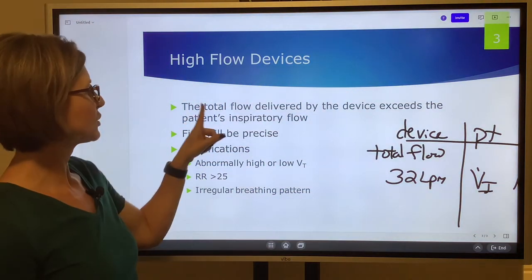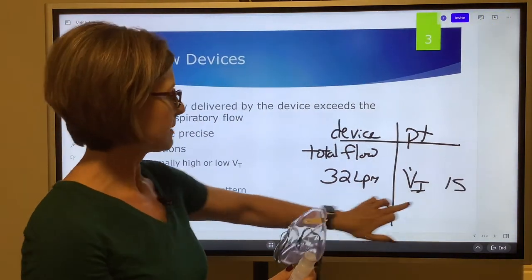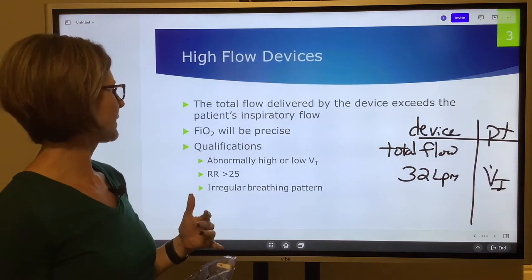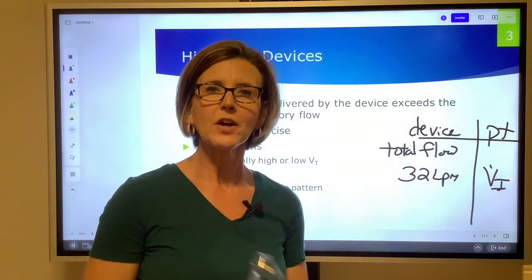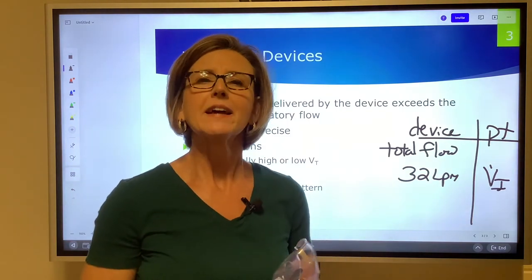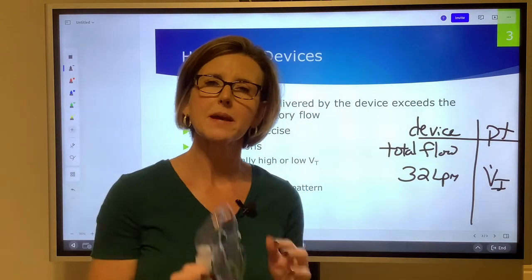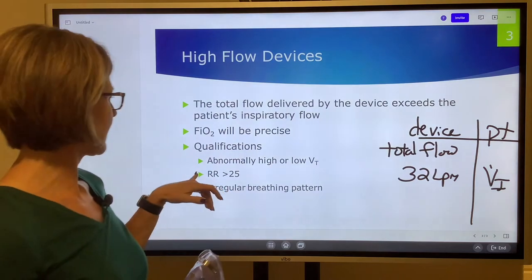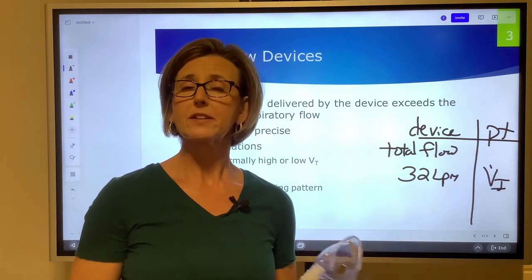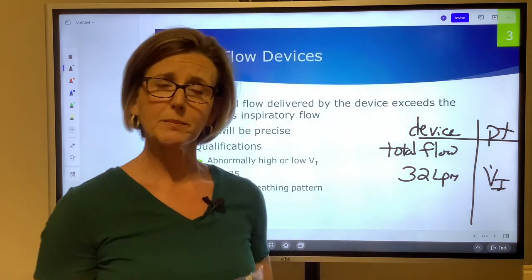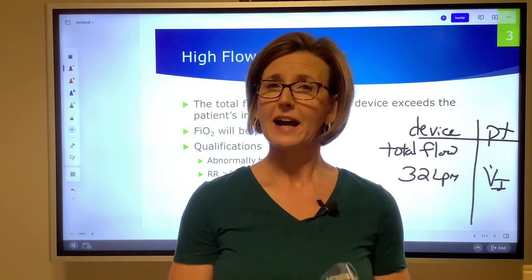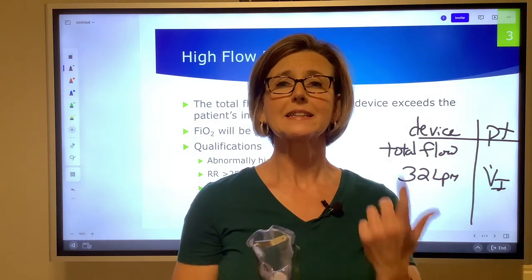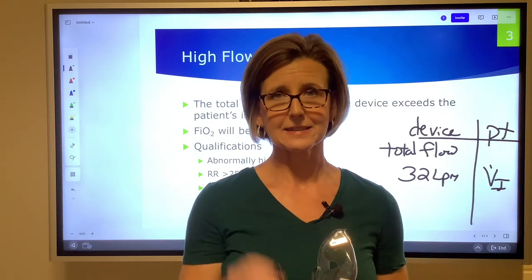The reason is that the total flow delivered by the device exceeds the patient's inspiratory flow. For high flow devices, we look at: abnormally low or high tidal volume — if you can barely see the patient breathe or they're hyper-expanding — an irregular breathing pattern, or a respiratory rate greater than 25. These patients benefit from a more precise FiO2. So to summarize: in a low flow system, the patient's inspiratory flow exceeds that from the device and FiO2 is variable. In a high flow system, the device's total flow exceeds the patient's inspiratory flow and FiO2 is stable.